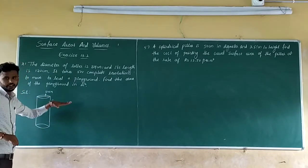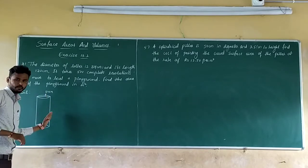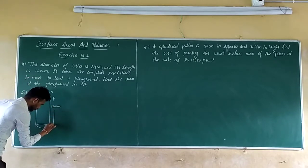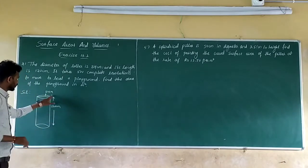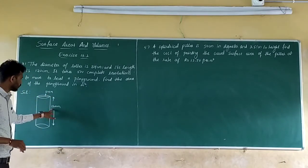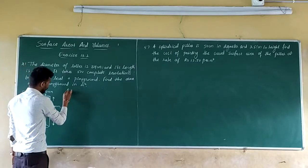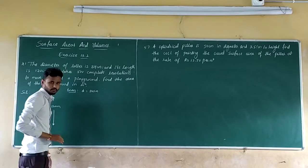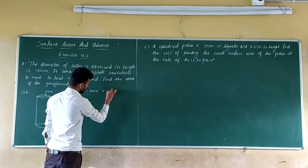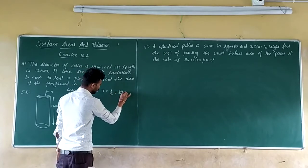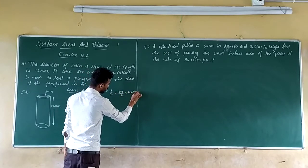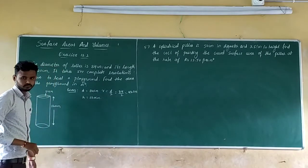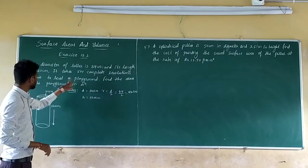If you keep the roller horizontally it will become length, if vertically it will become height. So length is 120 cm. Diameter is given as 84 cm, so radius equals d by 2, that is 84 by 2, which equals 42 cm. Height is 120 cm.